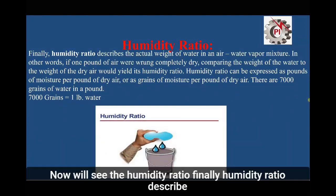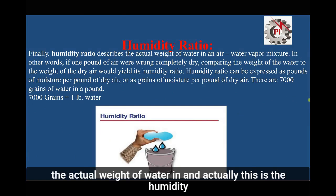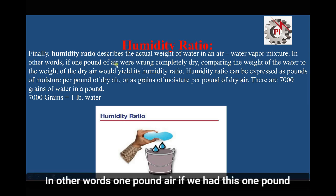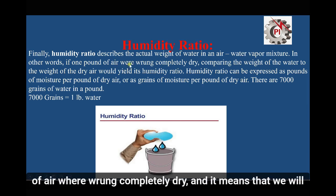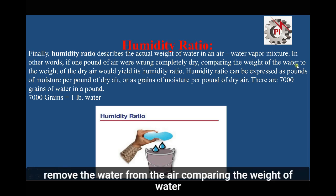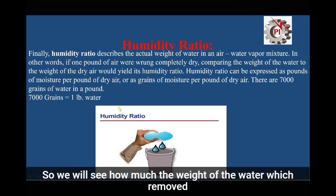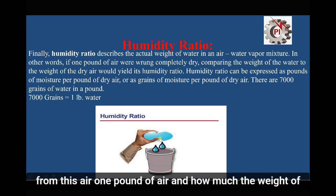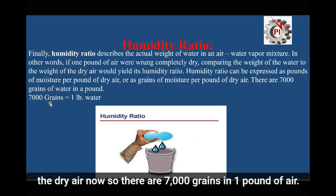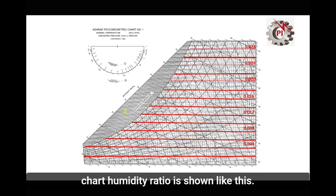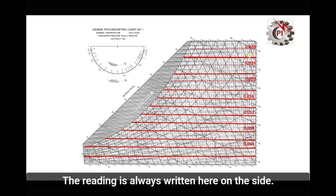Humidity ratio describes the actual weight of water vapor in an air-water vapor mixture. If we take one pound of air and run it completely dry — removing the water — comparing the weight of the water to the weight of the dry air gives the humidity ratio. There are 7,000 grains in one pound of air. In the psychrometric chart, the humidity ratio readings are shown on the right side.